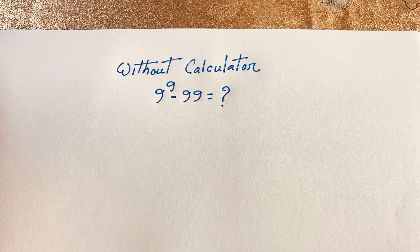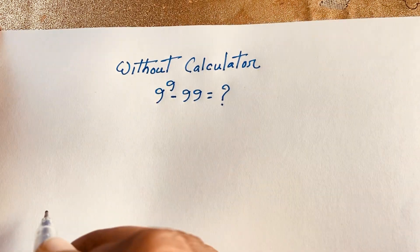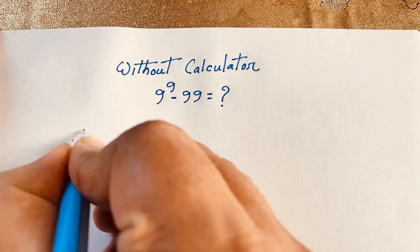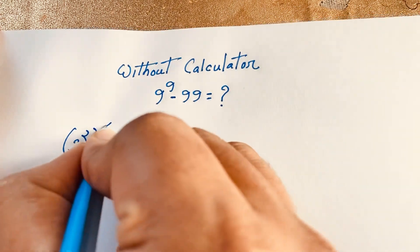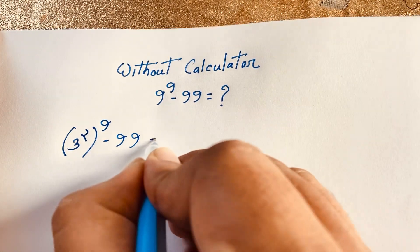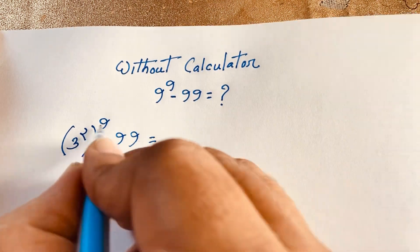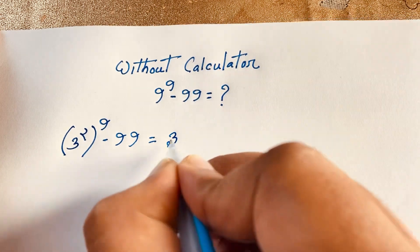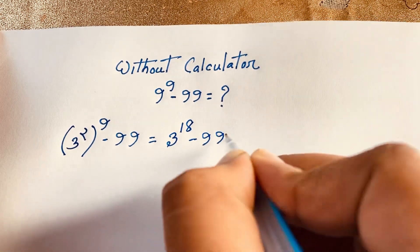First of all, here is 9 to the power 9. I can easily write 9 to the power 9 as 3 to the power 2, whole to the power 9, minus 99. Now applying the exponential law, 2 times 9 equals 18, so this expression becomes 3 to the power 18 minus 99.